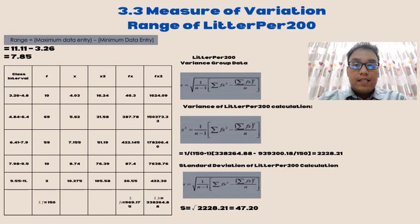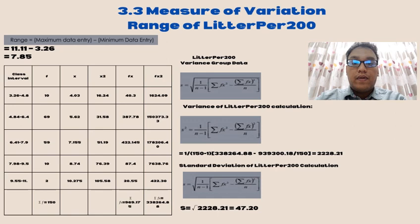Last is 3.3, measure of variation. In this part, the measure of variation has 2 formulas which is range and standard deviation. For the range formula, maximum data minus minimum data entry, we get 7.85. For the standard deviation, we get 47.20.